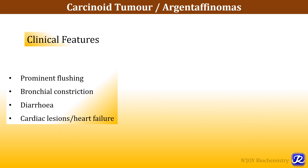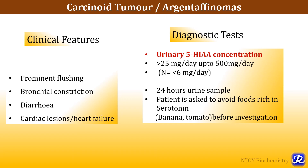The clinical features of carcinoid syndrome are prominent flushing, bronchial constriction, diarrhea, and cardiac lesions or heart failure. The diagnostic test is urinary 5-hydroxyindoleacetic acid concentration, which is more than 25 milligrams per day and can reach up to 500 milligrams per day, while normally it is less than 6 milligrams per day. A 24-hour urine sample is required, and the patient is asked to avoid serotonin-rich foods like banana and tomato before investigation.